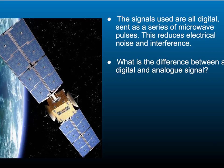In a digital signal, the signal is sent as a series of pulses. With satellites it is a series of microwave pulses. They are relatively low frequency and used to communicate with nearby satellites. To communicate with satellites much further away, higher frequency microwaves are used.